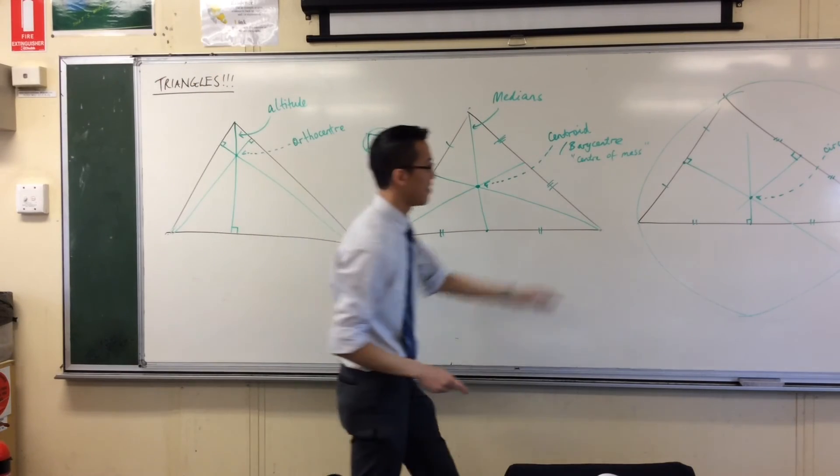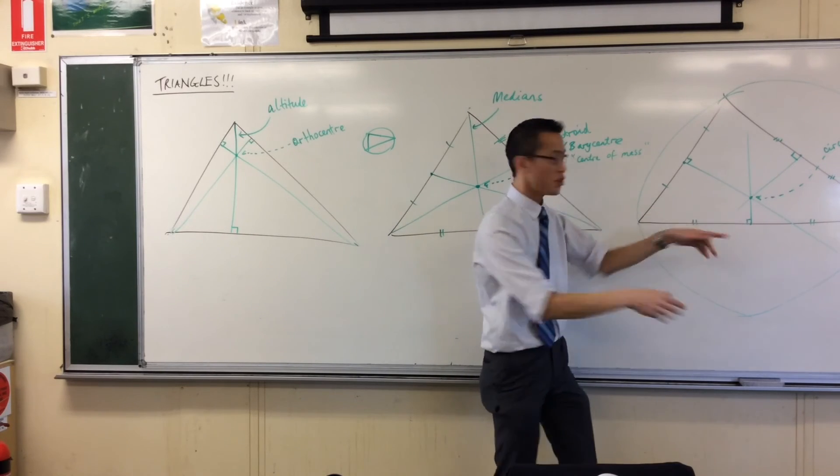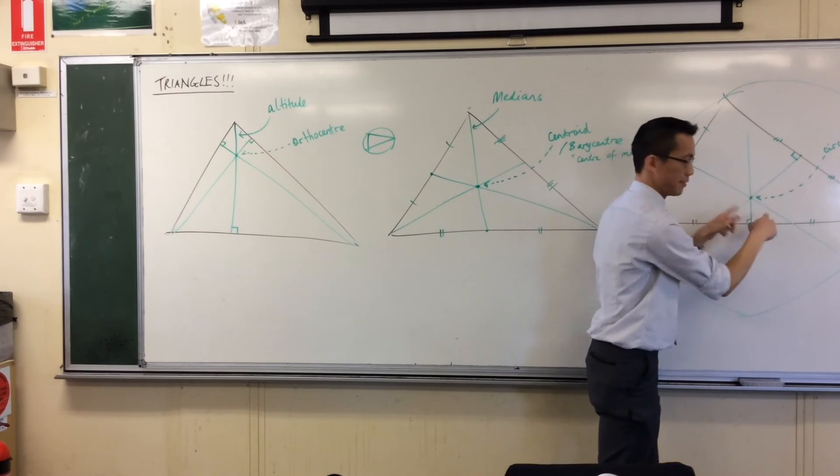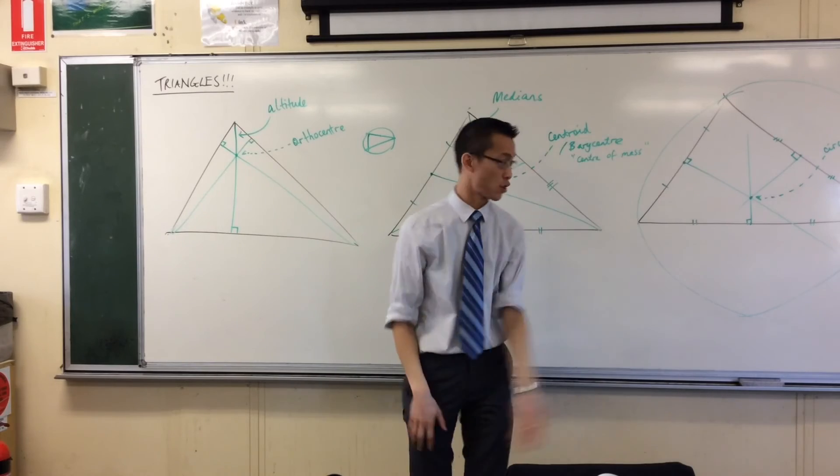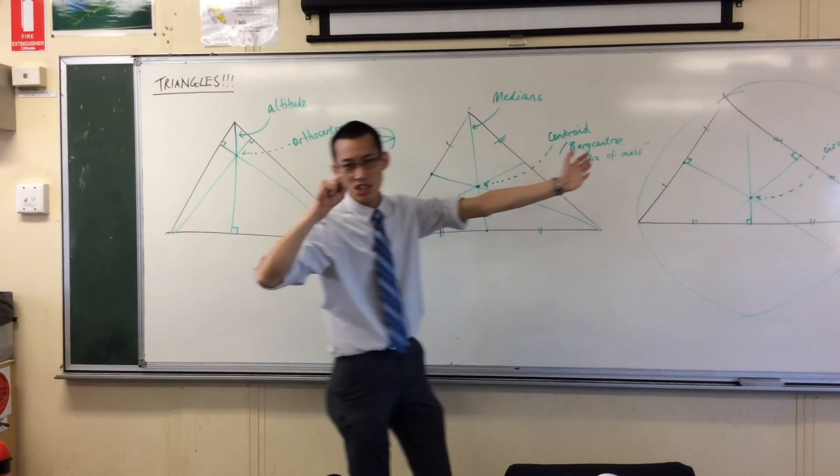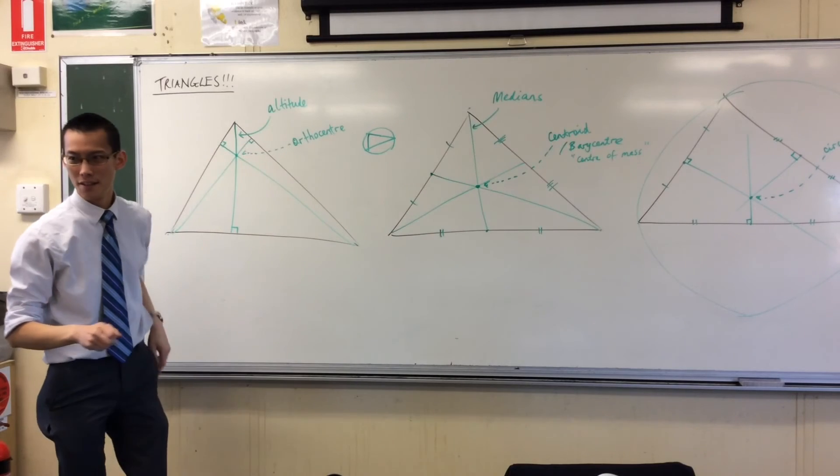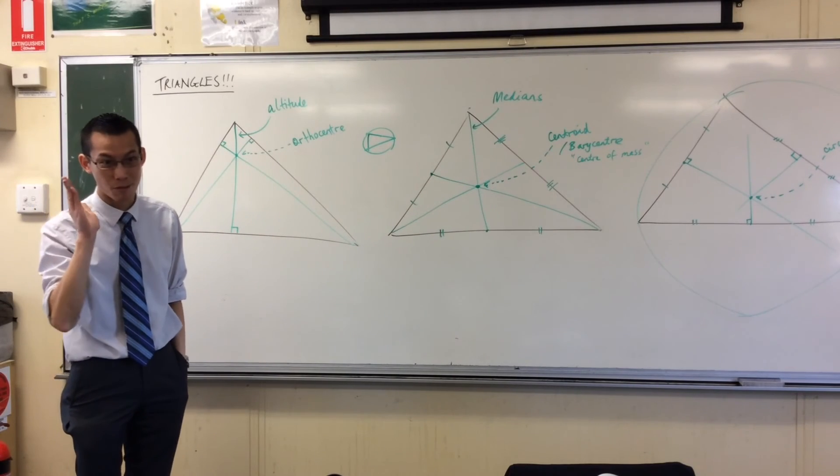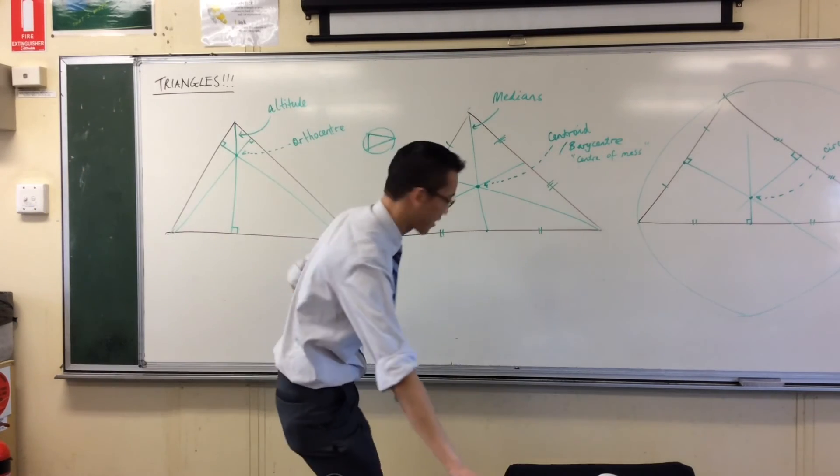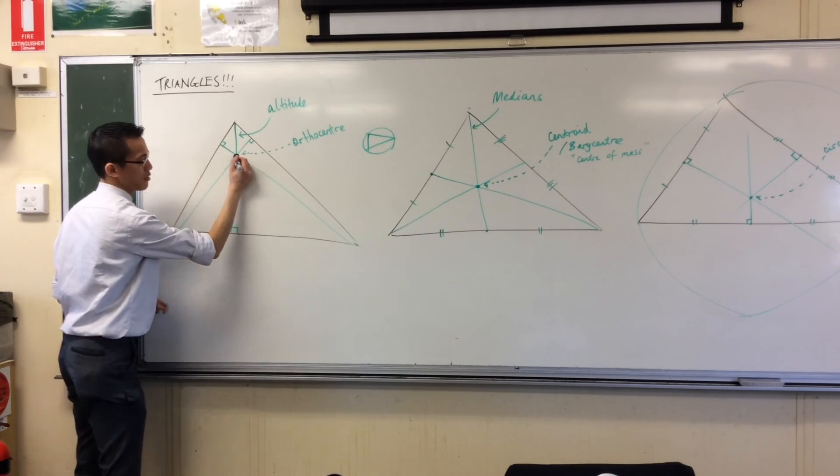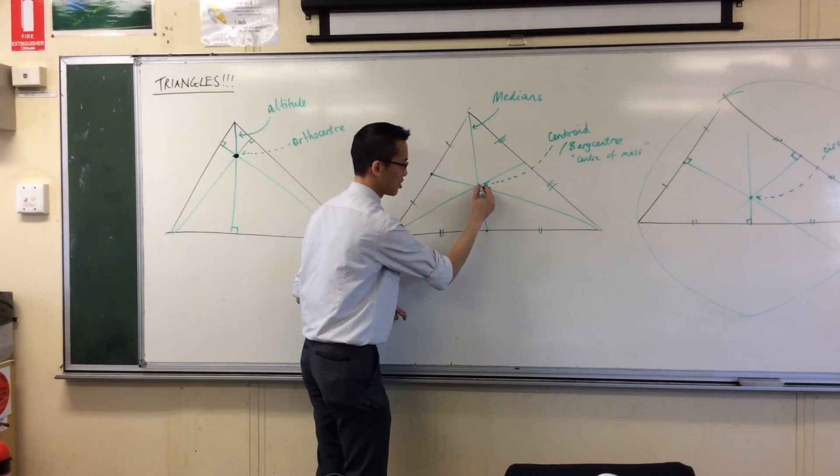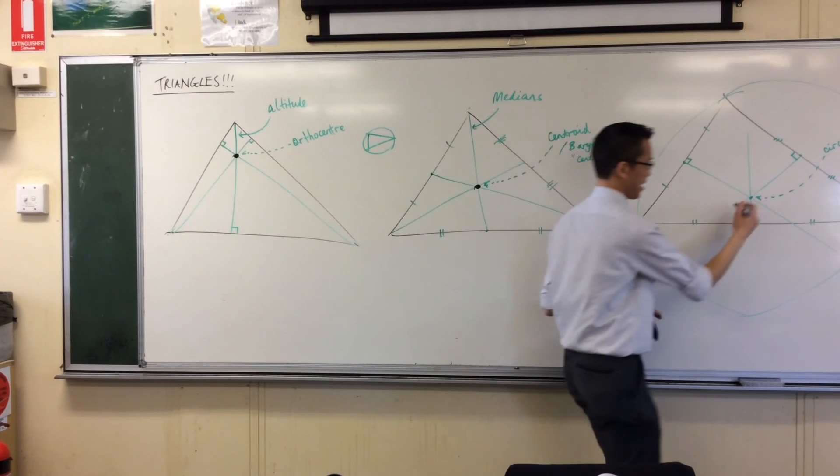They are perpendicular, and do you see they bisect every side of the triangle? So, perpendicular bisectors. It's astonishing enough that they are all concurrent. What's really, really weird is this fact. And by the way, this is not in the syllabus or anything like that, but it's just so astonishing that I can't not say it.